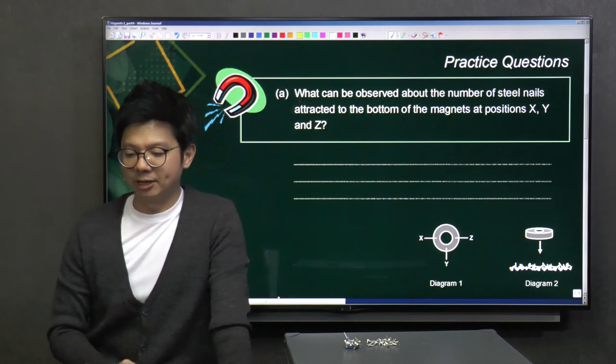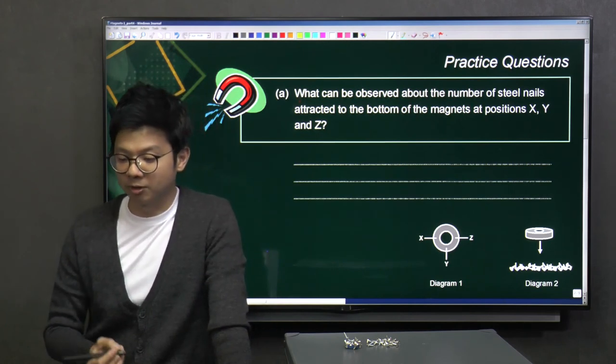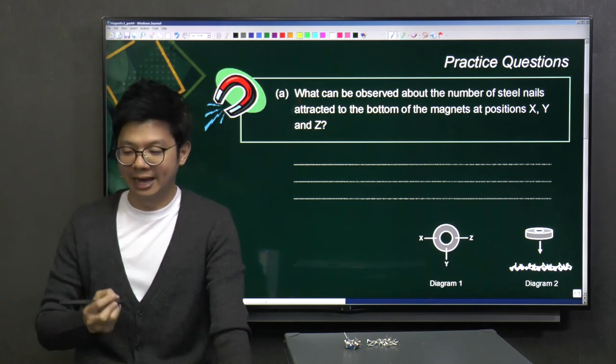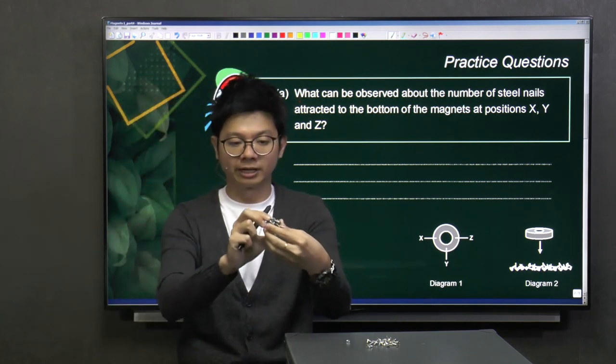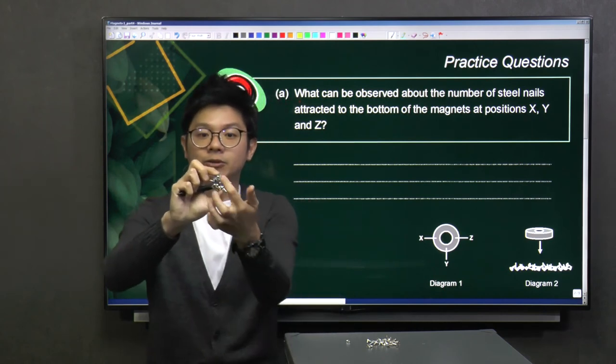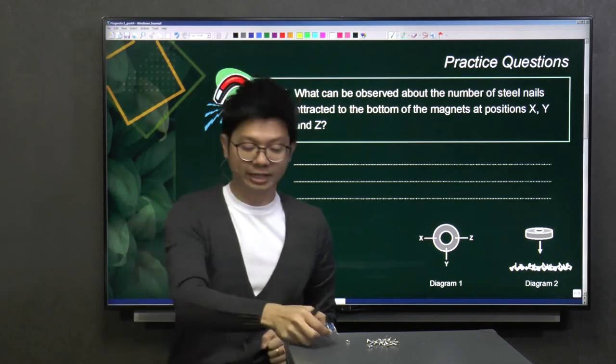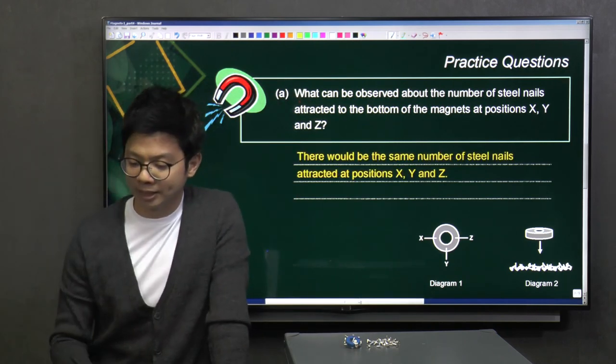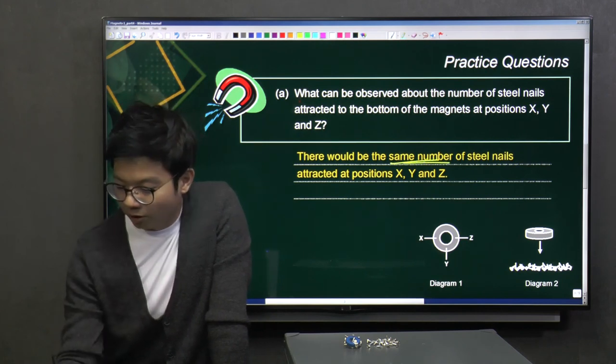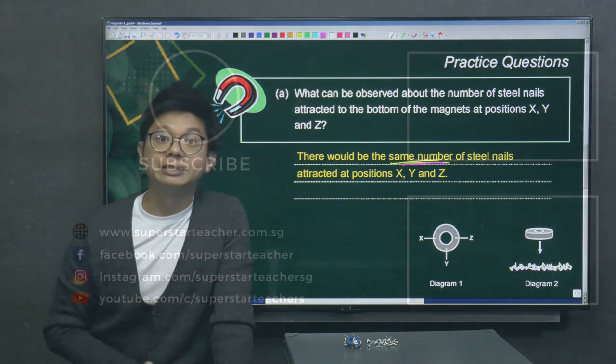Now, what can be observed about the number of steel nails attracted to the bottom of the magnets at position X, Y, and Z? If you look at this, can you see that the attracted iron nails, they are evenly spread out across the face? So we can say that there would be the same number of steel nails attracted at position X, Y, and Z.